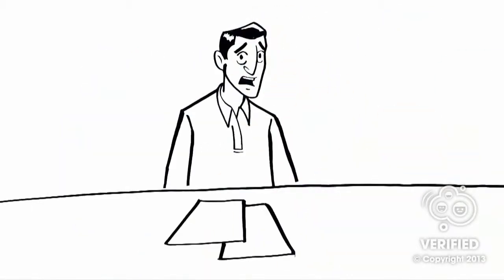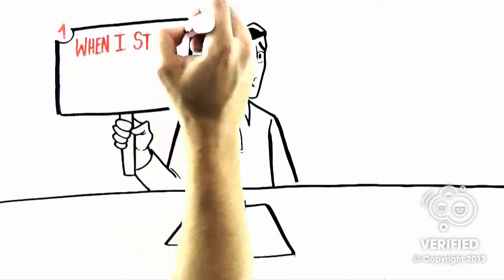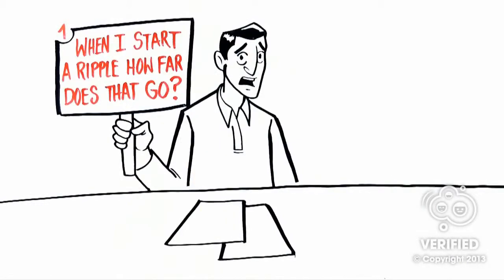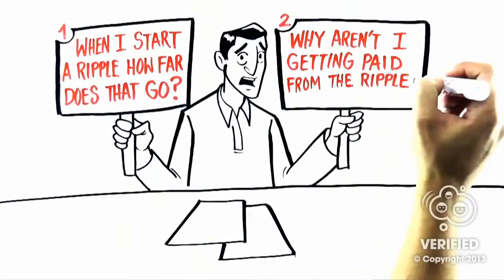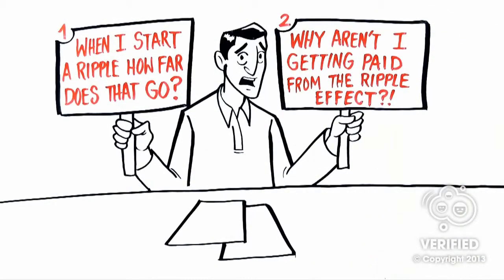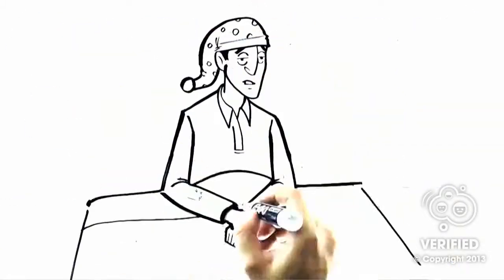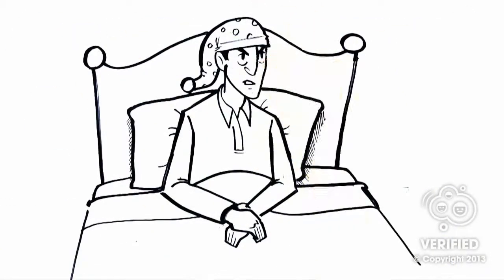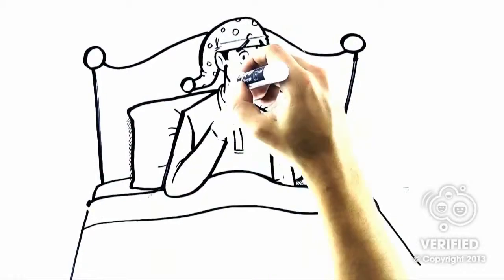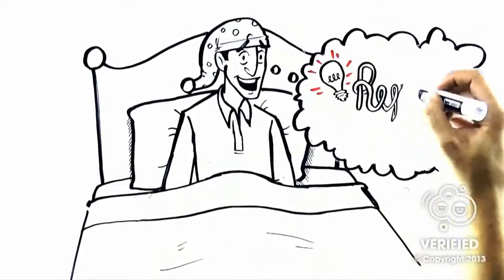Well a little while ago we asked ourselves these two important questions. First, when I start a ripple, how far does that go? And second, why aren't I getting paid from the ripple effect that I'm causing for these companies? These two questions kept us up at night, and at first they made us angry, and then curious, and then a little excited, and that's why we created Ripplin. It's a simple way to not only track your ripple, but to get paid for it as well.